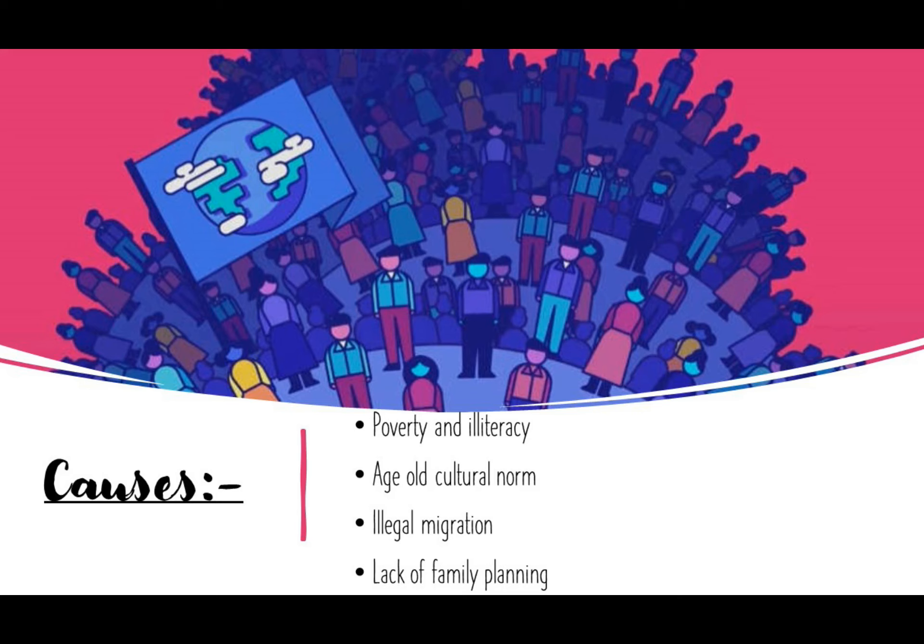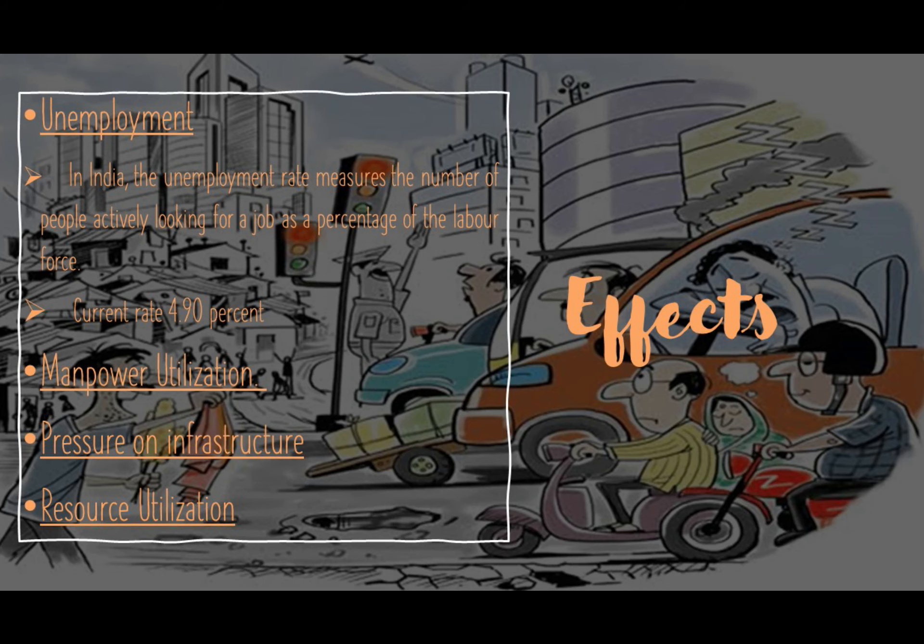We have talked about the causes. Now let's come to the effects of overpopulation. The main one is unemployment. In India, the unemployment rate measures the number of people actively looking for a job as a percentage of the labour force, and its current rate is 4.90%. Then there is manpower utilization. The third is pressure on infrastructure, and the last one is resource utilization. These are the main effects of overpopulation in India.